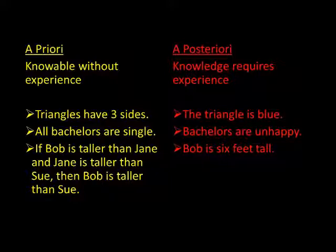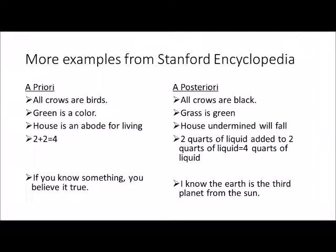Whereas a priori claims seem to be justified based on pure thought or reason, a posteriori claims are justified based on experience — we can only know them after experience. Examples include: 'The triangle is blue,' 'Bob is over six feet tall,' 'The boat is sinking,' and '60% of Americans are clinically overweight.' To review: 'All crows are birds' is a priori; 'All crows are black' is a posteriori. 'Green is a color' is a priori; 'Grass is green' is a posteriori. 'A house is an abode for living' is a priori; 'A house undermined will fall' is a posteriori. 'Two plus two equals four' is a priori, but 'two quarts of any liquid added to two more quarts of any liquid equals four quarts' is a posteriori.